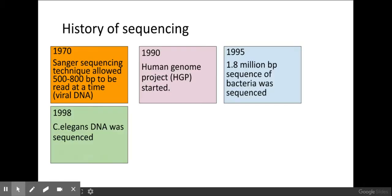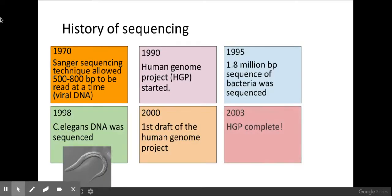As you can see over time we have improved the sequencing of DNA from 500 to 800 base pairs, then 1.8 million by looking at bacteria and then C. elegans which is a basic worm, and then all the way up to our whole genome, the human genome project.